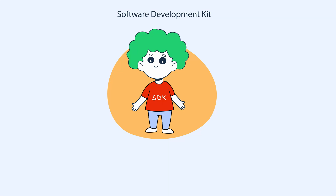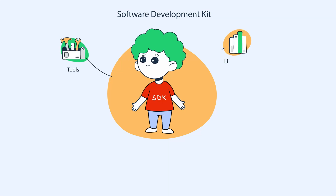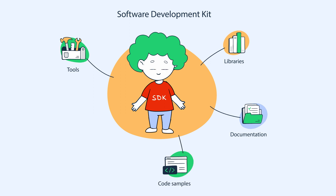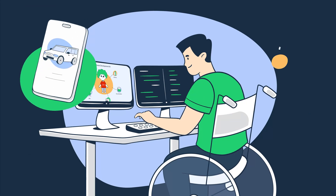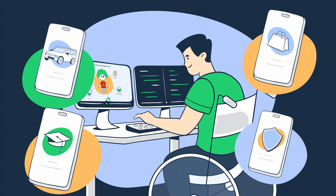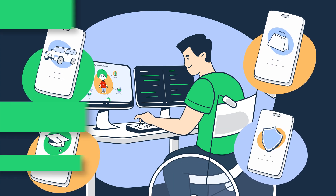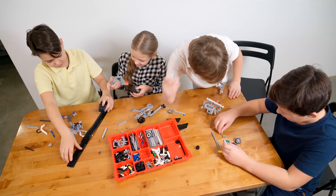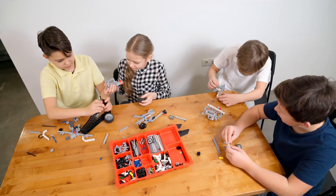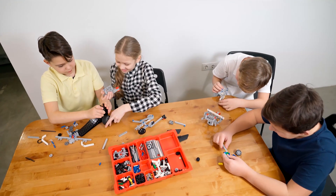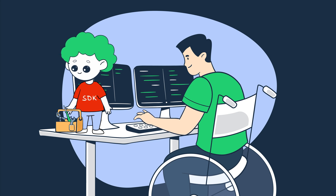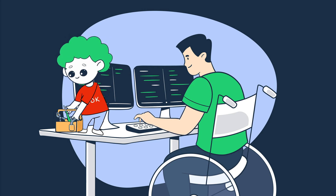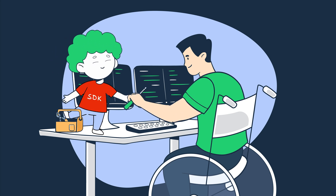An SDK, or Software Development Kit, is a collection of tools, libraries, documentation, code samples, and APIs that developers use to build software applications for specific platforms, frameworks, or devices. Think of it as a kids' craft kit that already includes everything you may need to build a robot or decorate headphones. Similarly, SDKs contain pre-built components and resources that you can tailor to your application or project.